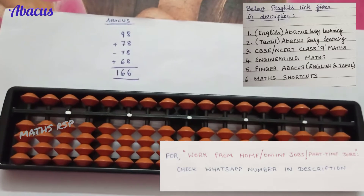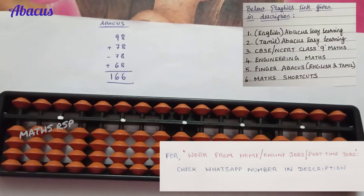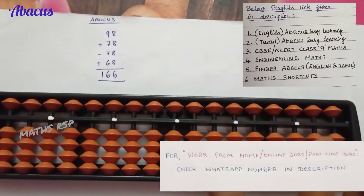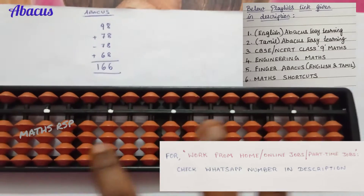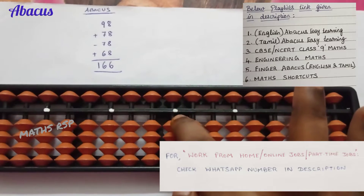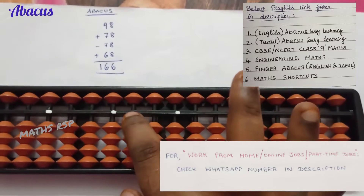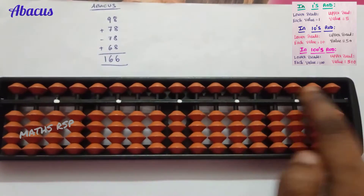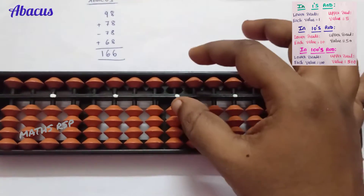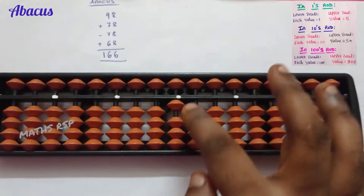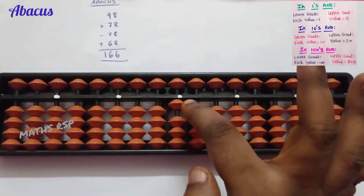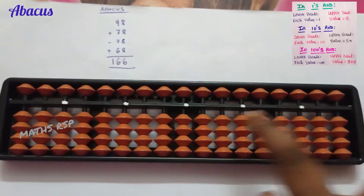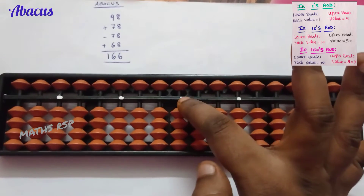Hello viewers, in this video I am going to explain this problem in English. First of all, I will tell you the basic things. Out of these five dots, the middle dot is the one's strot, ten's strot, hundred's strot, thousand's strot, ten thousand's strot. This horizontal line is the answer point. If you touch any beads like this, these beads are added, so the value is one.